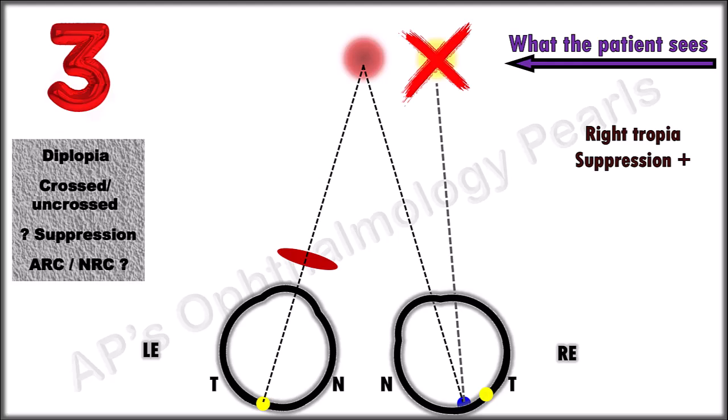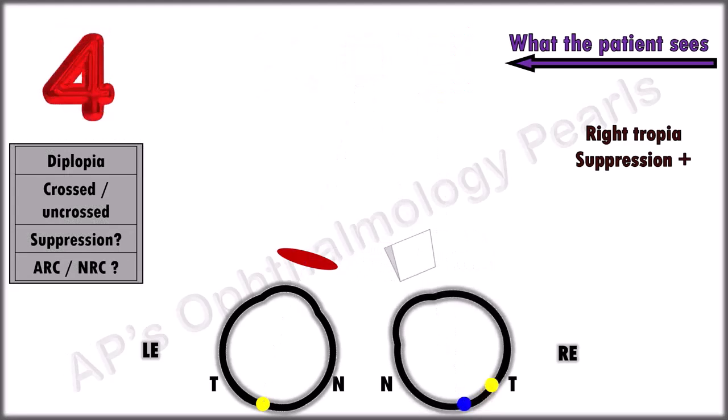Now regarding retinal correspondence. In the presence of suppression, in order to determine whether the retinal correspondence is normal or anomalous, a vertical prism is placed over the deviated eye to move the image out of the suppression scotoma. One of two patterns will be seen.